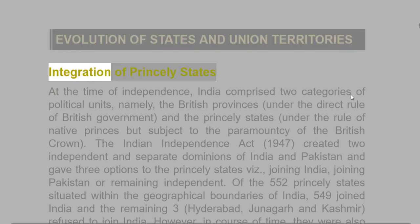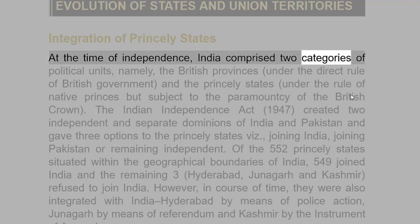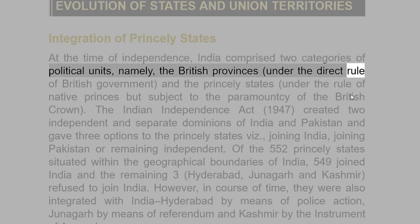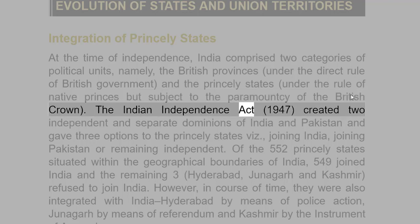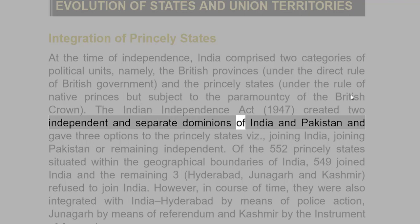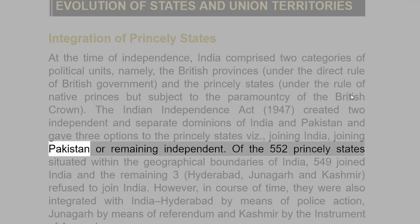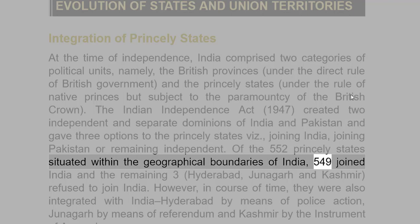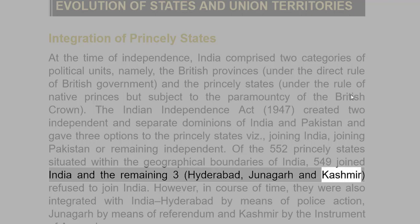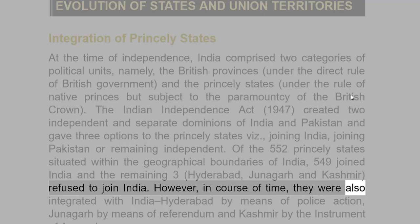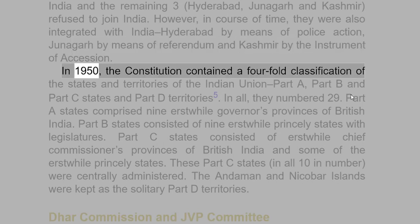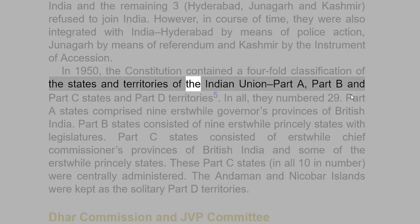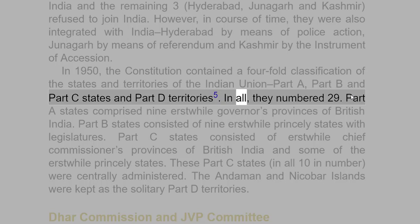At the time of independence, India comprised two categories of political units: the British provinces under the direct rule of the British government, and the princely states under the rule of native princes but subject to the paramountcy of the British Crown. The Indian Independence Act, 1947, created two independent dominions of India and Pakistan and gave three options to the princely states: joining India, joining Pakistan, or remaining independent. Of the 552 princely states situated within the geographical boundaries of India, 549 joined India and the remaining three — Hyderabad, Junagadh and Kashmir — refused to join India. However, in course of time they were also integrated with India. In 1950, the Constitution contained a fourfold classification of states and territories: Part A, Part B, Part C states and Part D territories, numbering 29 in all.